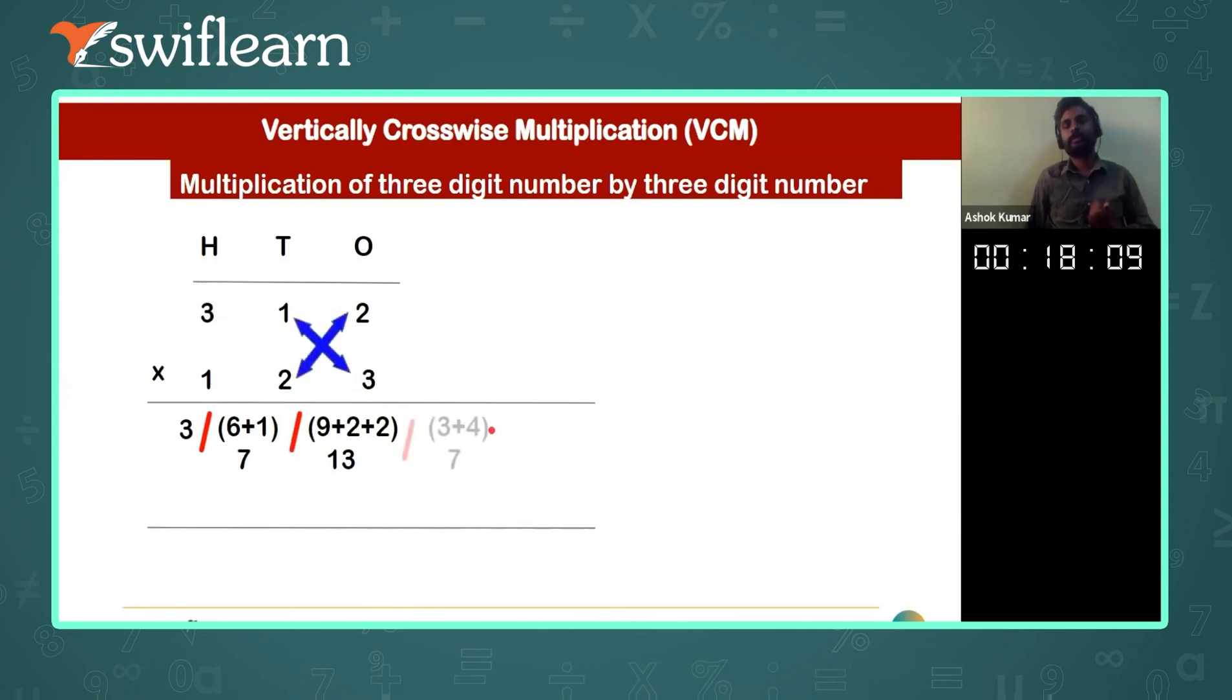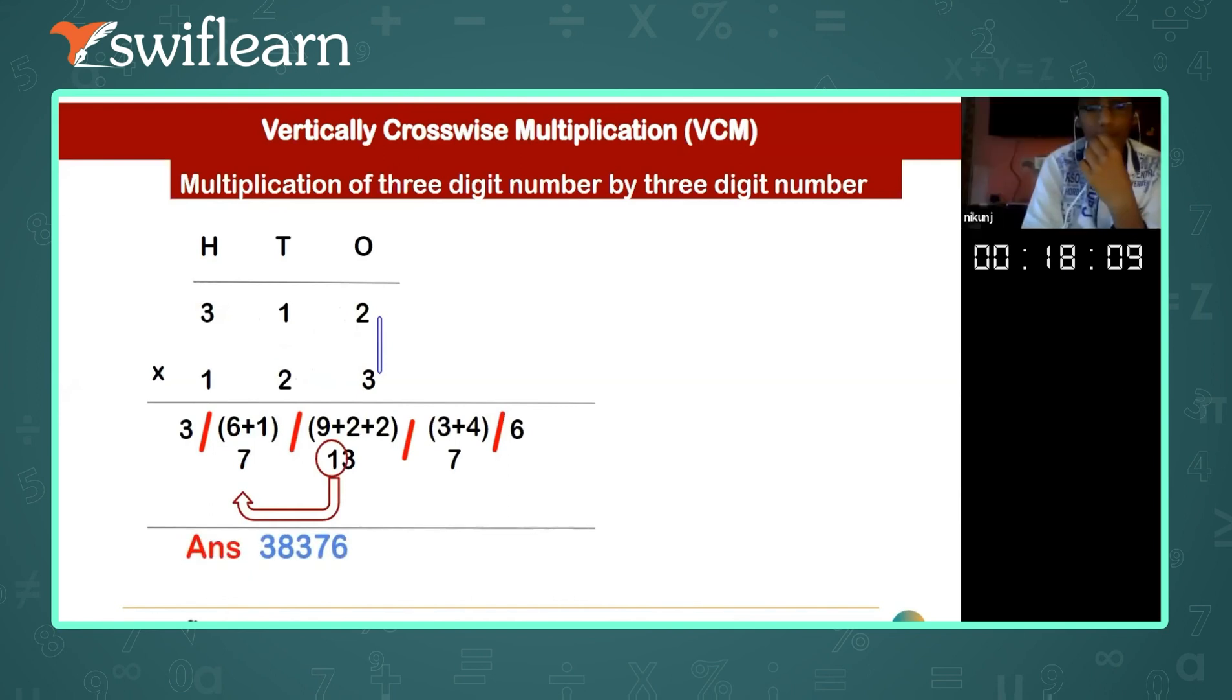So the last, this is your fourth step, and the last step you can see this is six, so six will remain the same. Seven will remain the same. Seven plus one, it will become eight. So this will be the answer. Clear? Any doubts?